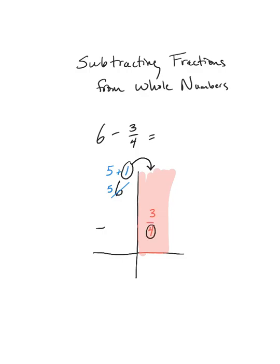The name of the fractions I'm working with here are fourths. So when I move that one whole over there, it's going to become fourths. This is where my knowledge of fractions kicks in — I know that there are four fourths in one whole. So now that I have regrouped that one whole over there, what I'm really doing is five and four-fourths minus three-fourths.